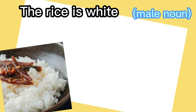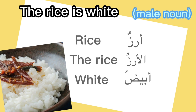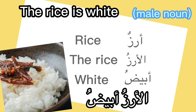So we say: السيارة حمراء — the car is red. Next, rice: أرز. أرز is a masculine noun. The rice: الأرز. White: أبيض — we keep it as it is. الأرز الأبيض — the rice is white.